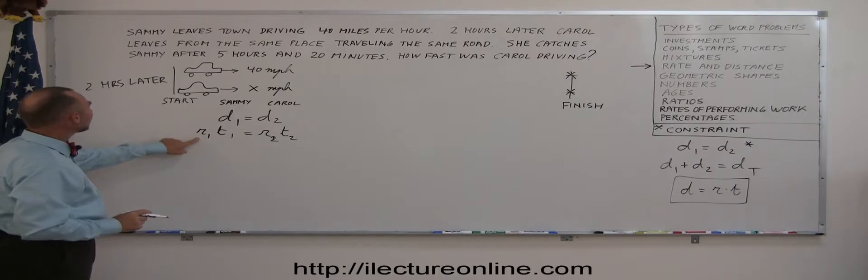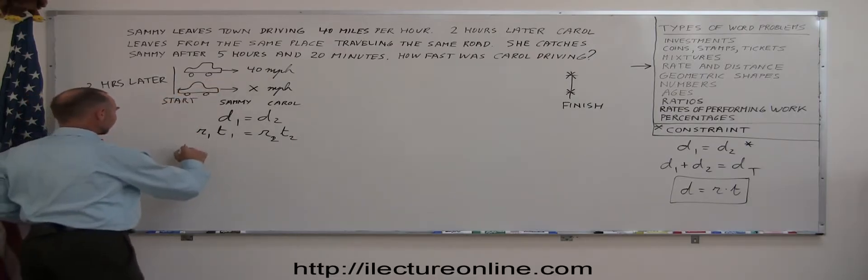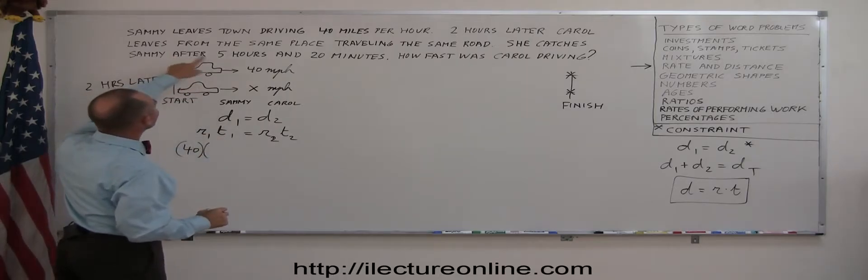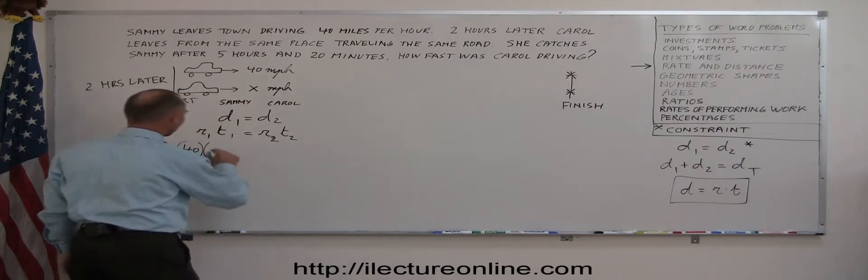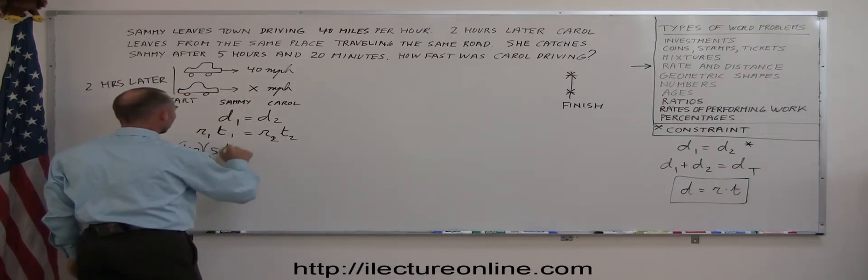The rate of Sammy is 40 miles per hour. And the time that Sammy takes, she takes a full 5 hours and 20 minutes. Now, 20 minutes is 1 third of an hour. So we can write 5 and 1 third hours.